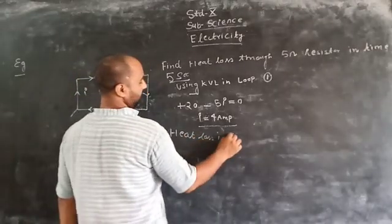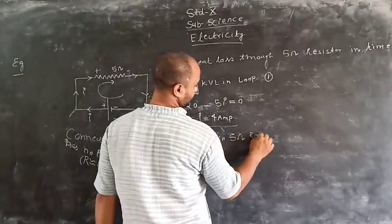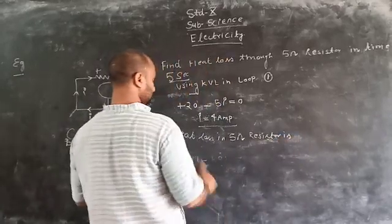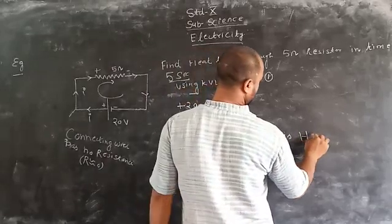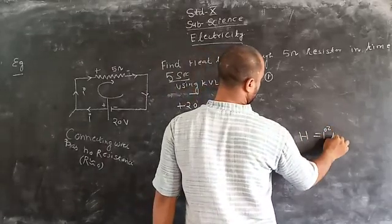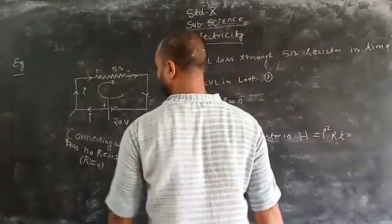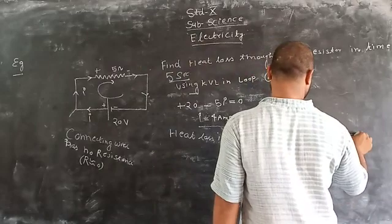Heat loss in the 5 ohm resistor is H = I²Rt. What is the current and resistance? The resistance is 5 ohms and the current is 4 amperes.